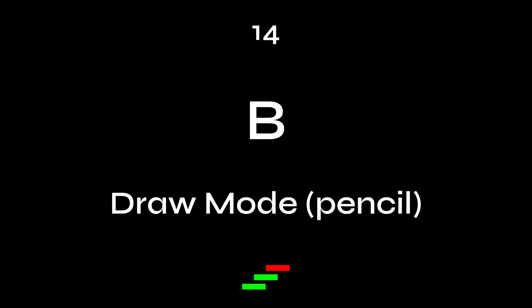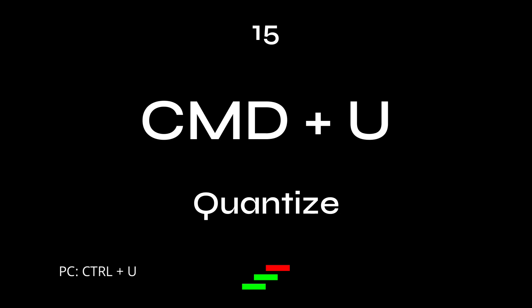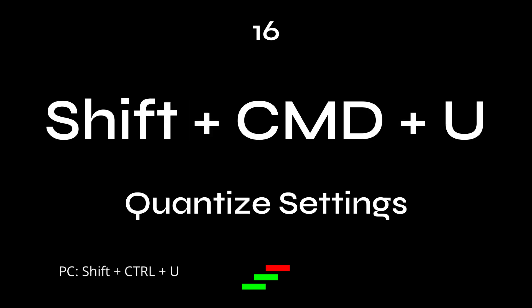Fourteen: B — draw mode, pencil tool. Fifteen: Command-U — quantize. Sixteen: Shift-Command-U — quantize settings.